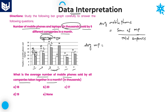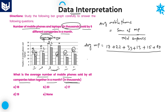In the given question, the values are asked in terms of thousands, and the options are also given in terms of thousands, so we can take the values directly. Company P mobile phones: 17; company Q: 22; company R: 33; company S: 13; company T: 15; company U: 20. These are the mobile phone values for each company. Divided by the total number of companies, which is 6.